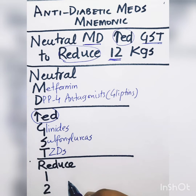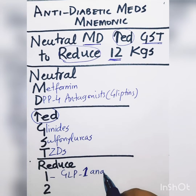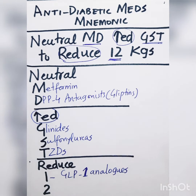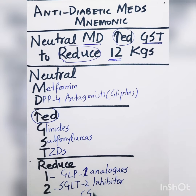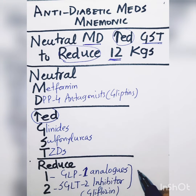The two groups of medications that decrease weight are GLP-1 analogs, such as liraglutide, and SGLT-2 inhibitors, also known as gliflozins — for example, empagliflozin and dapagliflozin. Because both of these medications reduce weight, they are considered cardioprotective.